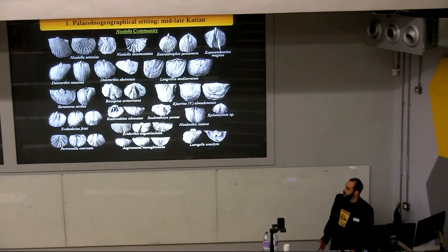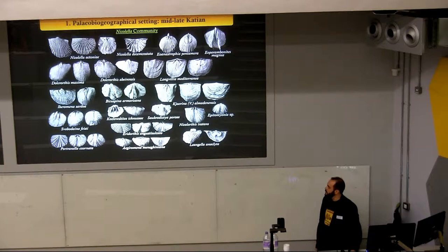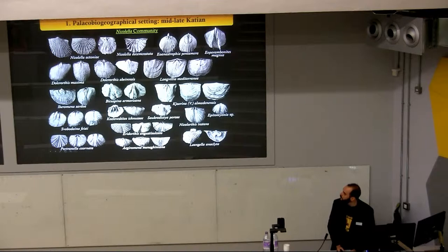Among these invaders stands out the member of the Nicolella community, which is a brachiopod-dominated community, really highly diverse, reaching up to 28 species in a single locality. It is dominated mainly by the brachiopod Nicolella actoniae, visible in the upper left part, but also includes other typical brachiopods of this community such as Anastropia, Porambonites, etc.